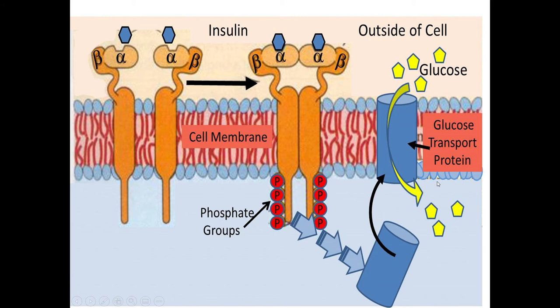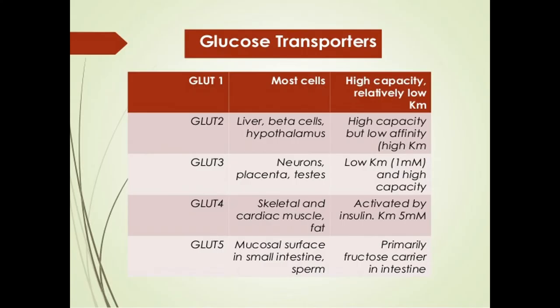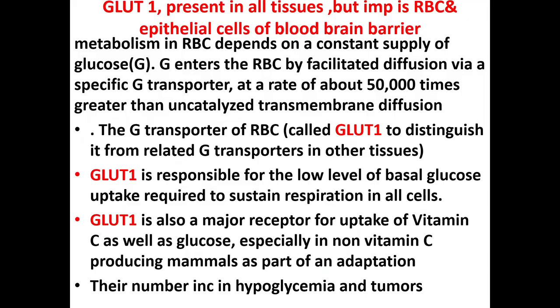The insulin receptor diagram shows alpha subunits where insulin attaches and beta subunits with phosphate groups. This ultimately leads to different actions as seen in the previous lecture. The glucose transporter protein, GLUT, is present in the cytoplasm and moves to the membrane to allow glucose entry. Insulin attaches to the receptor and the transporter is a separate component.